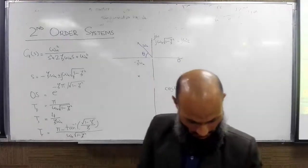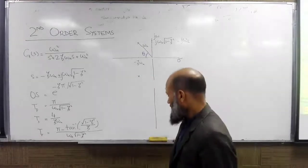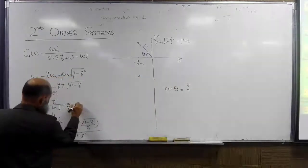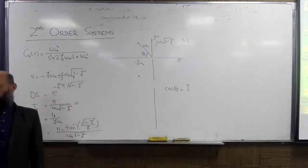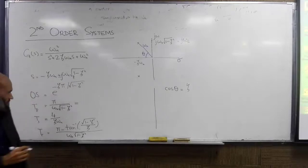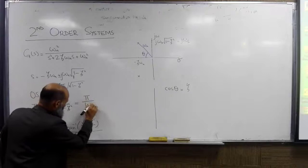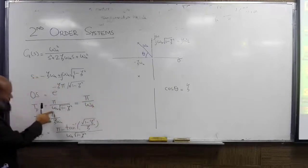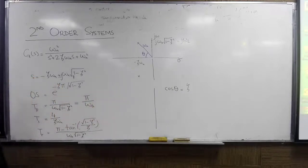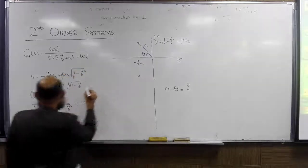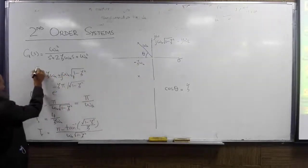With these definitions, we rewrite the expressions. The peak time — the time required for the response to reach its peak value — is simply equal to pi over omega_d. This we have called omega_d. For settling time, the real part, which is zeta times omega_n, we rename it sigma, so the poles are at minus sigma plus or minus j omega_d.